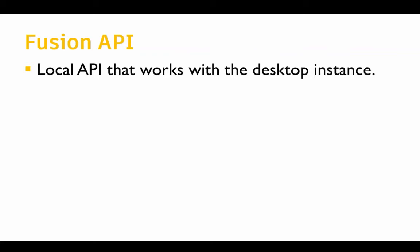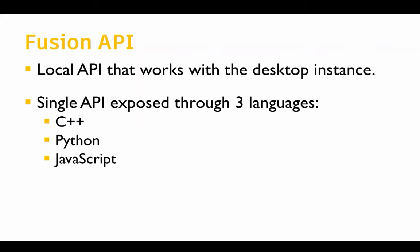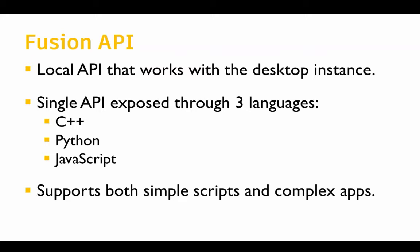Now to the main topic: the Fusion API. The API is also a local API — you're installing Fusion locally, it's running locally, and the API runs locally in that local instance. We have a single API, exposed through three different languages: you can choose C++, Python, or JavaScript. The API supports writing both simple scripts and more complex apps that have more advanced user interfaces.